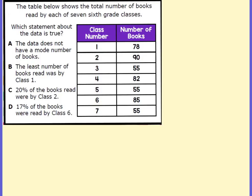The table below shows the total number of books read by each of the seven sixth grade classes: first through seventh period. First period read 78 books, second period 90 books, and so on. Which statement about the data is true? We're looking for what is true.